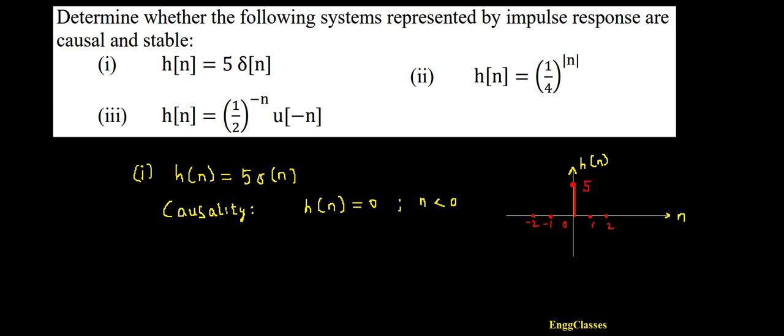For a system to be causal, its impulse response must be 0 for n less than 0. Just check this image. I should not have anything over here for n less than 0. If this is satisfied, I would say that the given system is causal straight away. Just by looking at the image, the given system is causal.